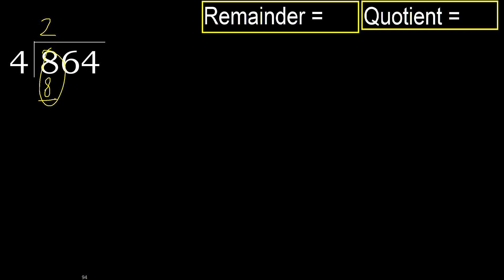Subtract. 8 minus 8 is 0. Next, eliminate 0. Ok. Bring down 6.